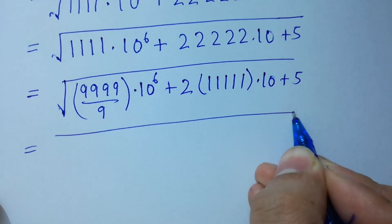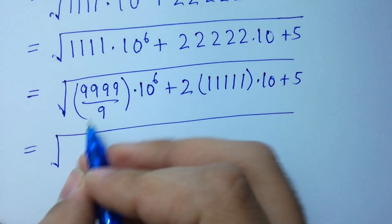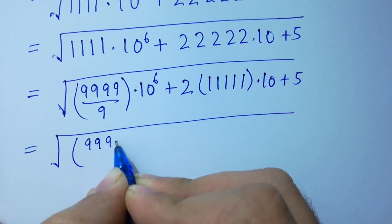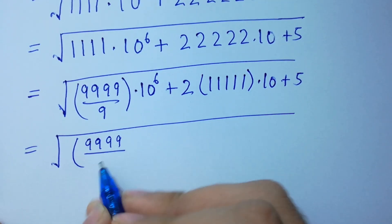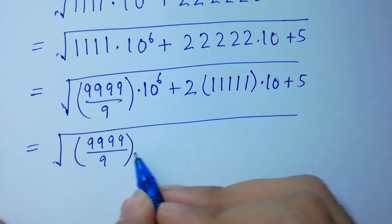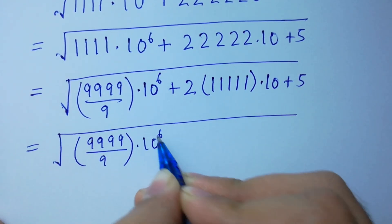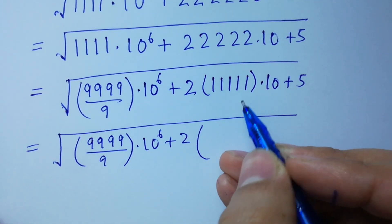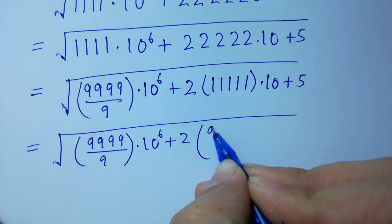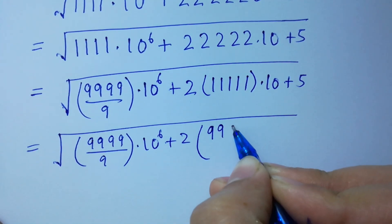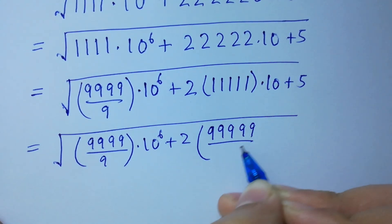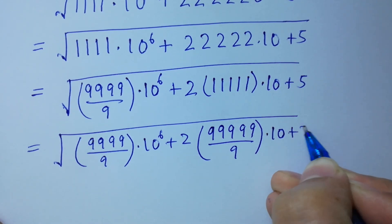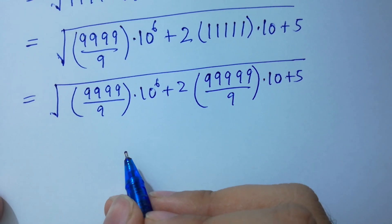Square root of four times nine, over nine, times ten to the power six, plus two. And here five times one is the same as five times nine, over nine, times ten as it is, plus five. Very simple.